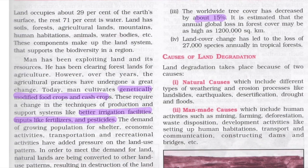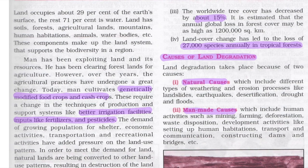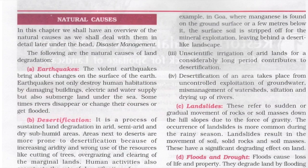Land cover changes have led to the loss of 27,000 species annually in tropical forests. Land degradation takes place because of two reasons: natural causes and man-made causes. Natural causes include different types of weathering, erosion processes like landslides, earthquakes, desertification, drought, and floods. Man-made causes include human activities that disturb the environment, like mining, farming, deforestation, waste disposal, and development activities.